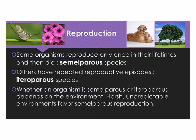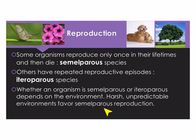Whether an organism is semelparous or iteroparous depends on the environment. Harsh, unpredictable environments will favor semelparous reproduction.